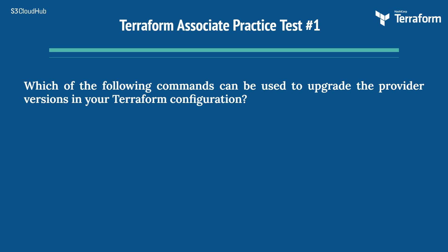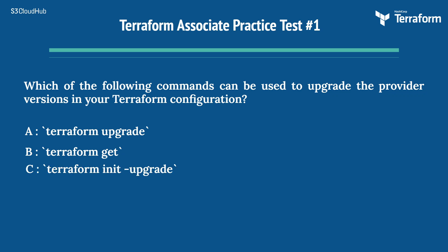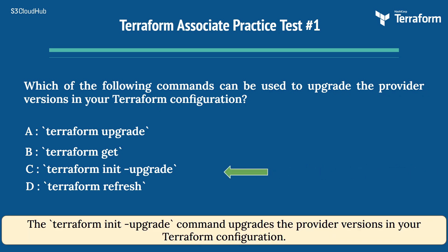The first question is: which of the following commands can be used to upgrade the provider versions in your Terraform configuration? The options are: A) Terraform Upgrade, B) Terraform Get, C) Terraform Init Upgrade, D) Terraform Refresh. The right answer is Option C, Terraform Init Upgrade. The Terraform Init Upgrade command upgrades the provider versions in your Terraform configuration.